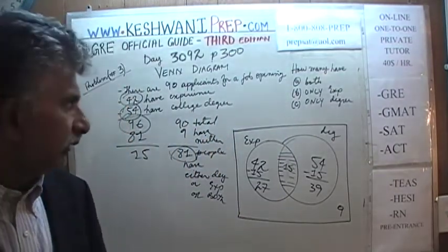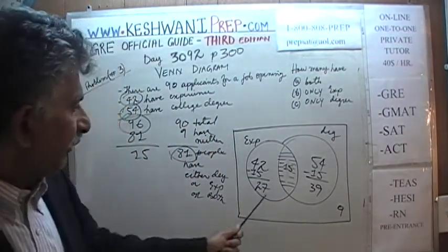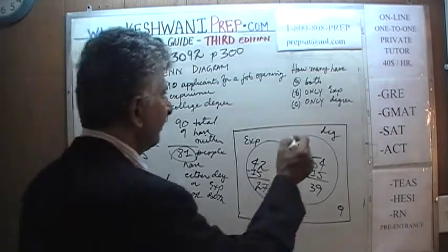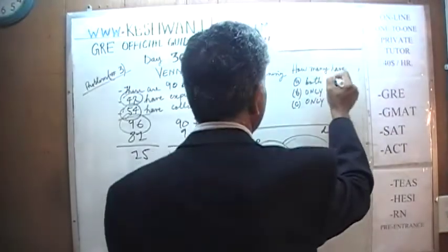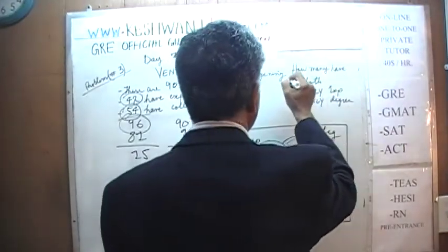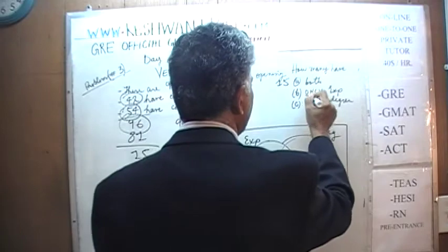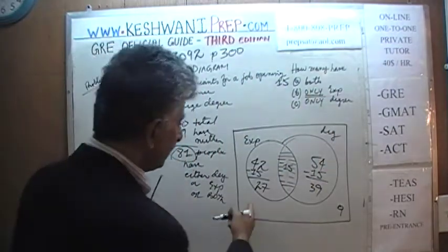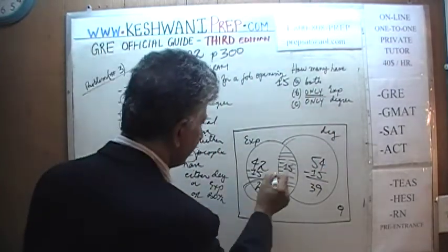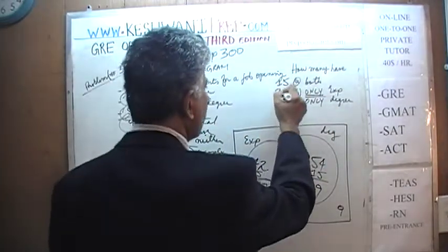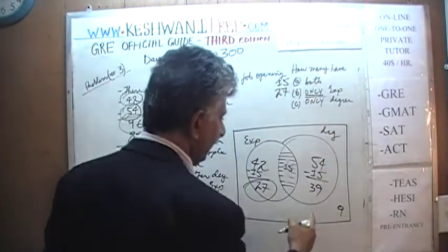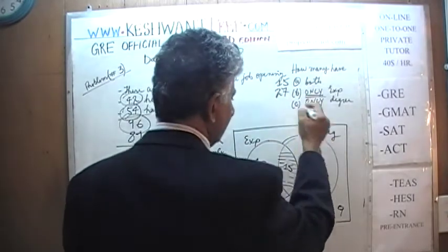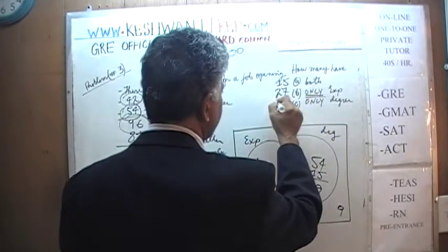There is our answer. How many of them possess both characteristics? The answer is 15. How many have only job experience? 27 people. And how many have only degrees? 39 people.